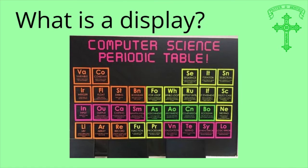Next question — what is a display? What does a display look like? Here, for example on the screen, is just a simple keywords display for computer science programming, mainly about what computer science is. It's a replica of a periodic table format, and we've picked out keywords like variable, constant, integer, float, etc. — you can read it on your screen.